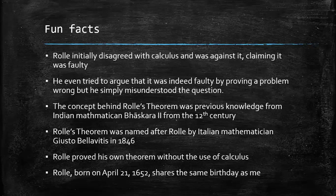The theorem itself was named after Rolle by Italian mathematician Giusto Bellavitis in 1846. Interestingly enough, Rolle developed a theorem named after him without the use of differential calculus, because at the time he was of the opinion that calculus was flawed. Remember, he was one of calculus's greatest critics.